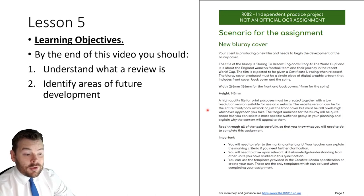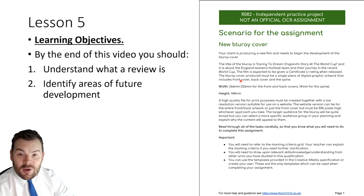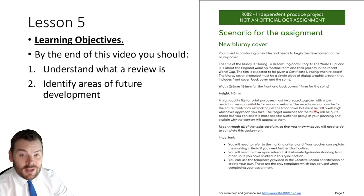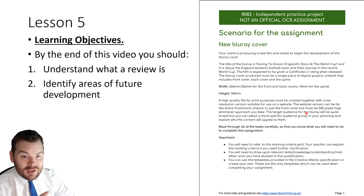So take a look at my Photoshop videos for those ones. The graphic should have been Daring to Dream in the Store at the World Cup. It should have a certificate U, it should have a front and back cover, a spine, and it should be the specified measurements. You should have two versions of this by now: a high quality file and a low quality file. The low quality one must be 500 pixels high. You must have exported both of your graphics, saved in an appropriate file name and folder, along with all your assets and an assets table. So there's quite a lot that needs to be done.